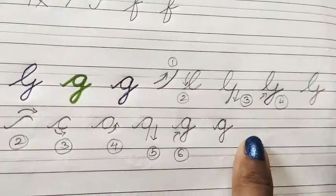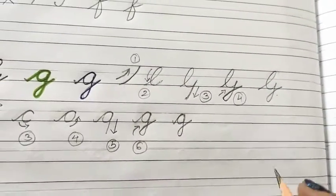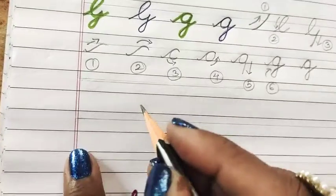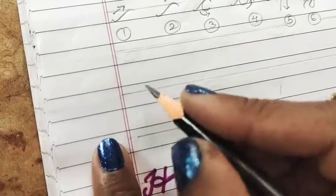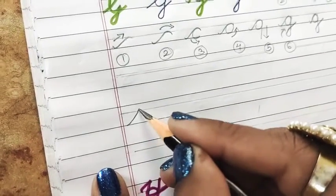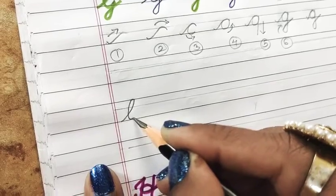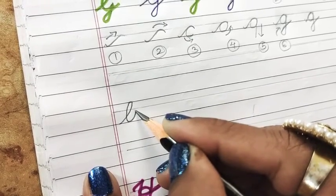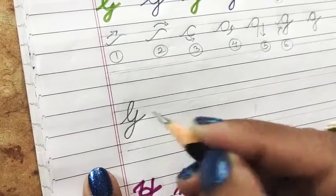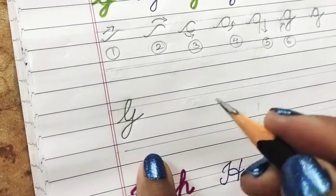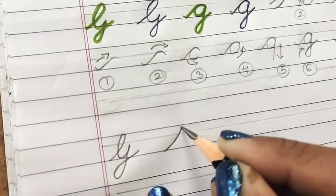And your G is done. So I'll show you how. See, draw a slant line like this, create a loop, form a curve, bring it down, again a curve, and your G is done. One more time.